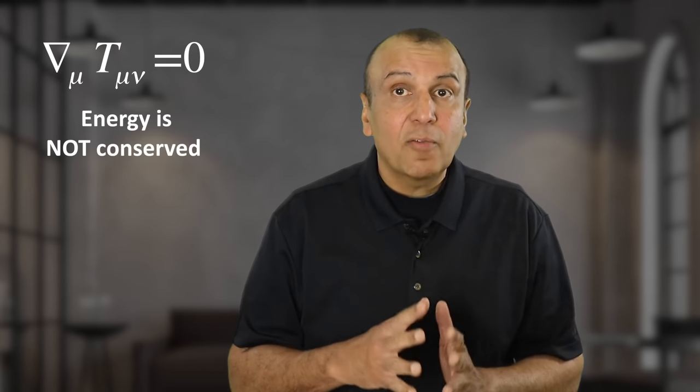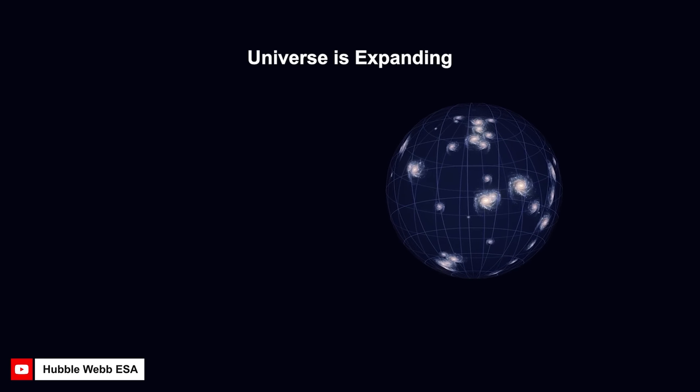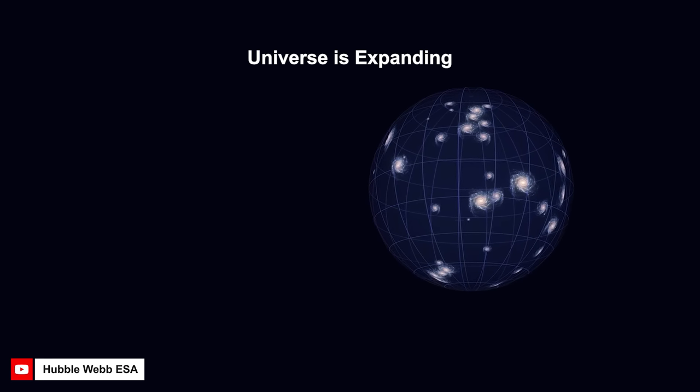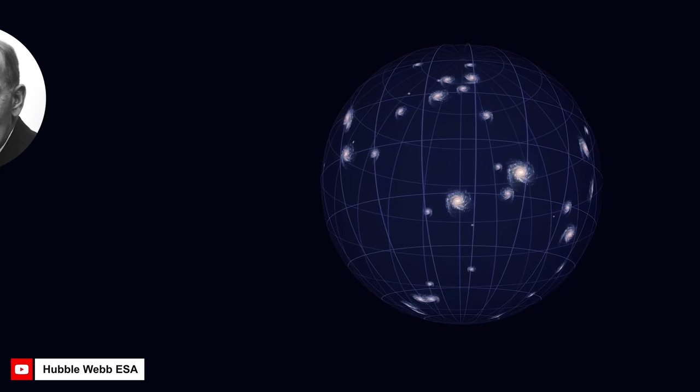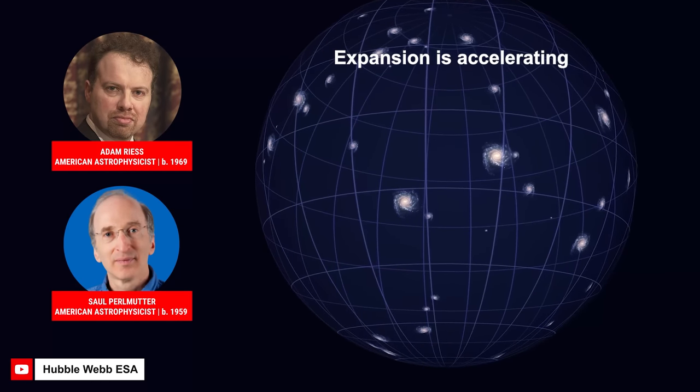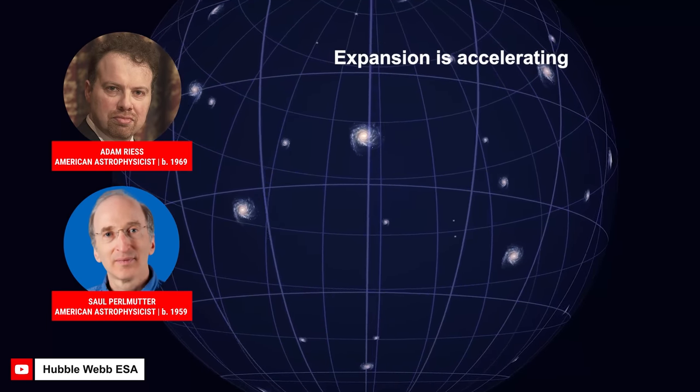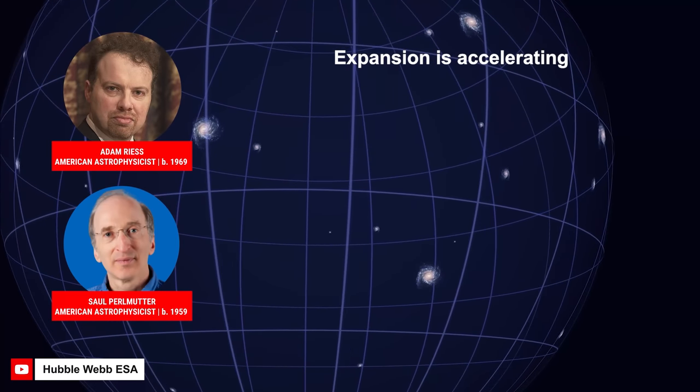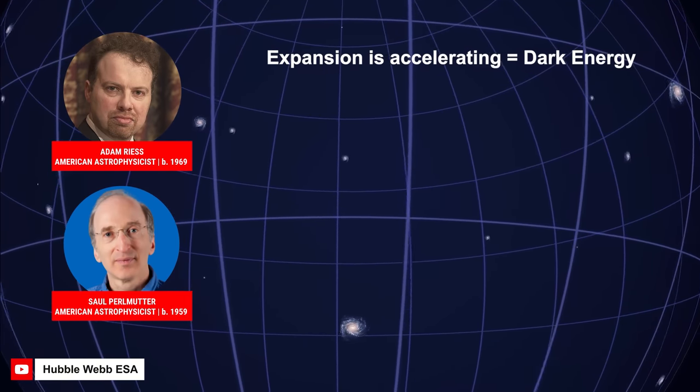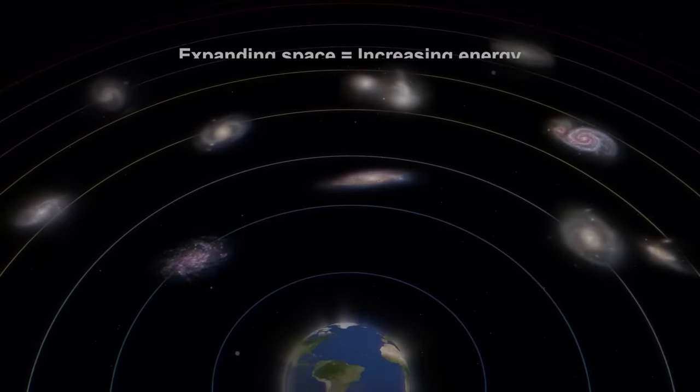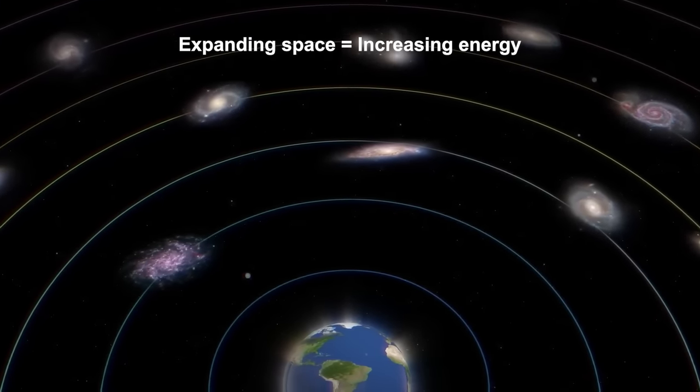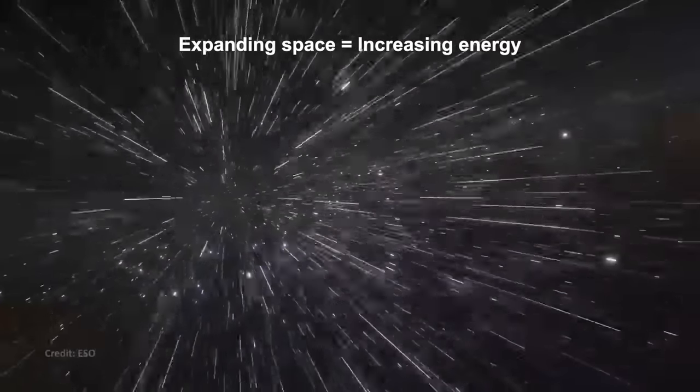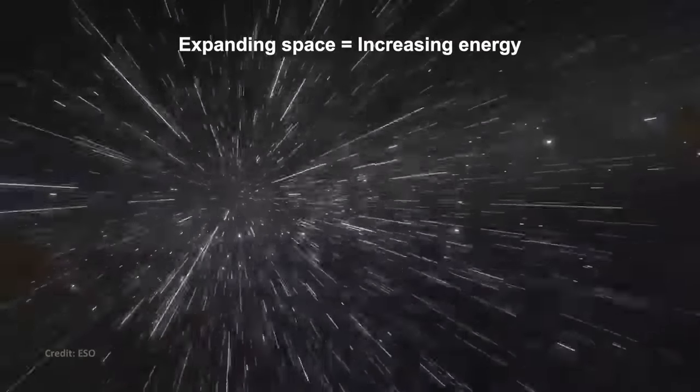We can point to several observations that confirm this. The first is the observed expansion of the universe. The first empirical evidence of this was gathered in 1929 by Edwin Hubble. Then in the late 1990s, scientists discovered that the universe is not only expanding, but that this expansion is accelerating. This acceleration is called dark energy.